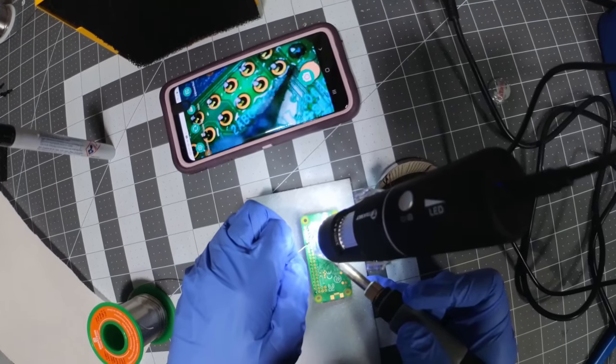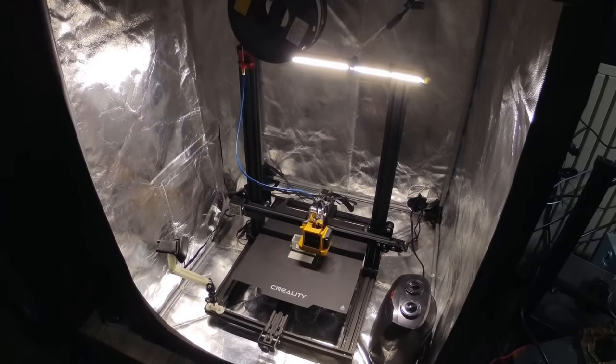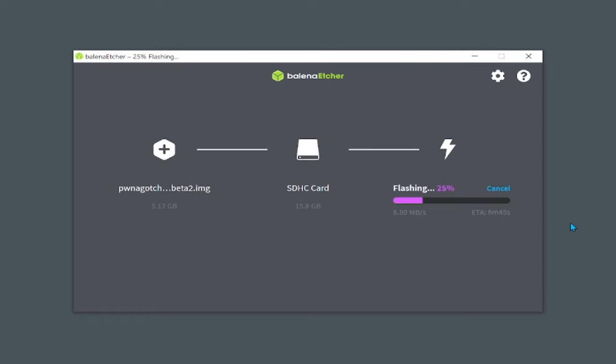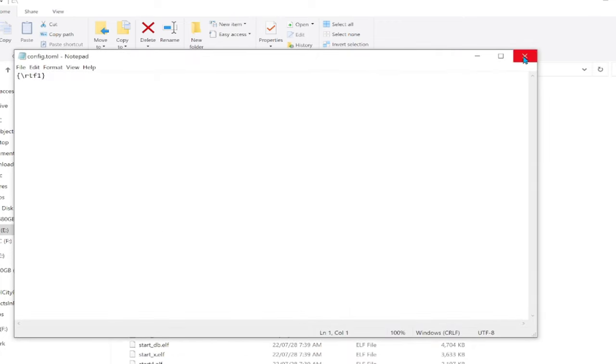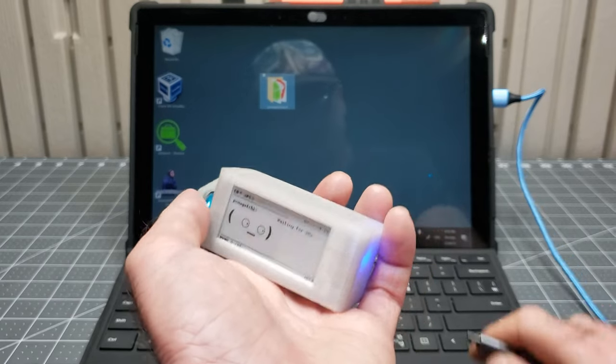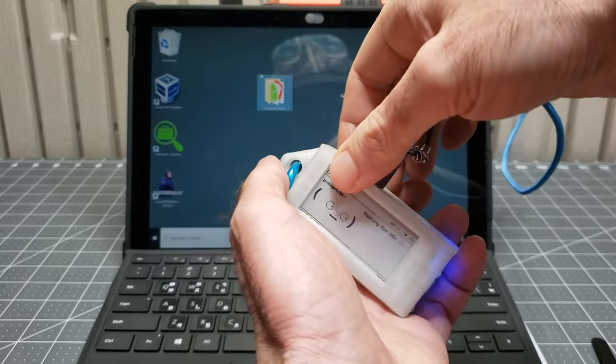On the hardware side, we're going to be doing some soldering and 3D printing, and on the software side, we're going to flash the OS, configure the card while it's still connected to Windows, boot the Pwnagotchi, and then further configure it using Ethernet over USB.